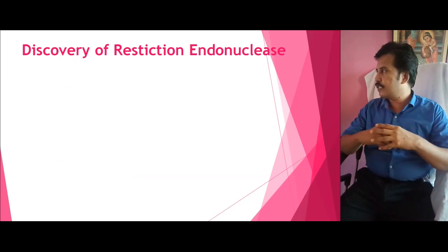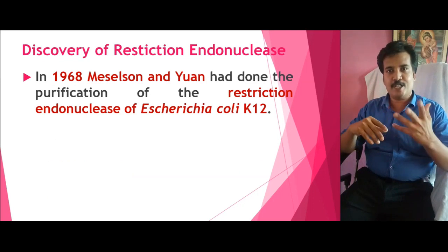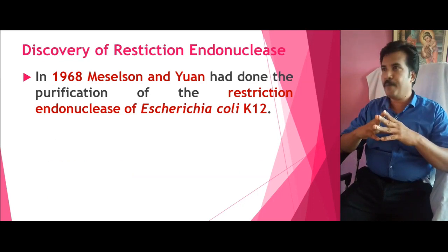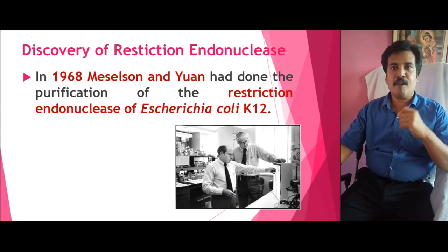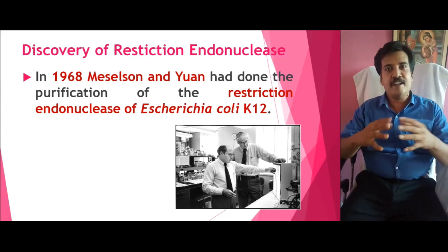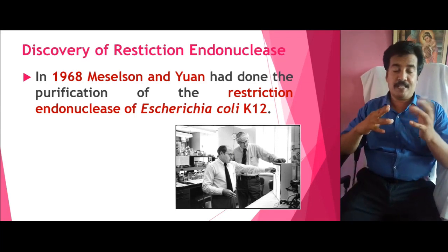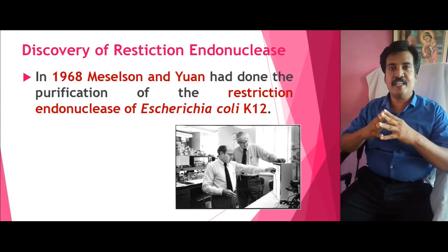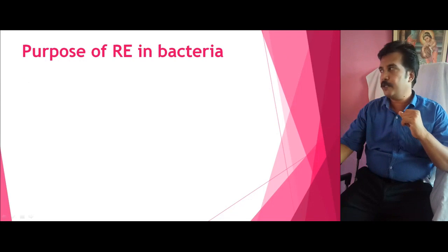Until the discovery of restriction endonuclease in 1968, two scientists — Meselson and Yuan — isolated an enzyme called restriction endonuclease from a bacterium called Escherichia coli K12. This discovery proved to be an important one, especially in the development of recombinant DNA technology and more precisely in the precise restriction of DNA.